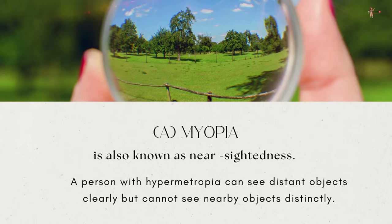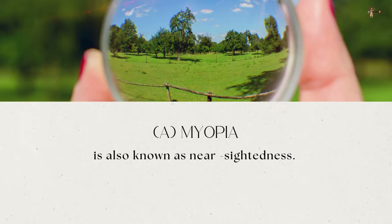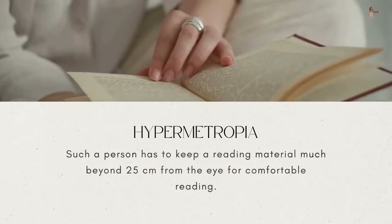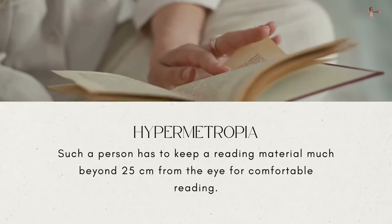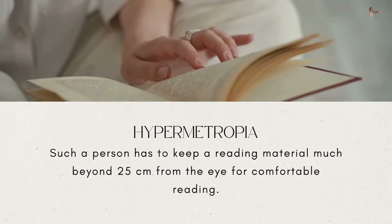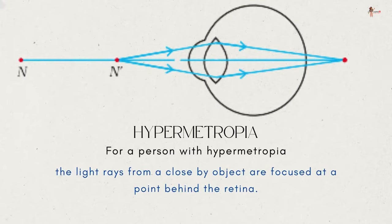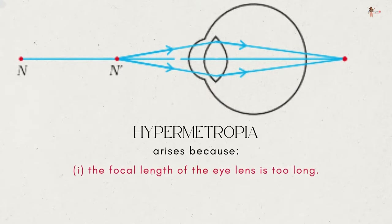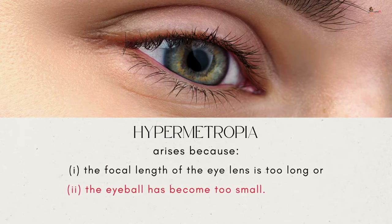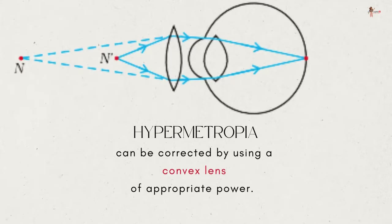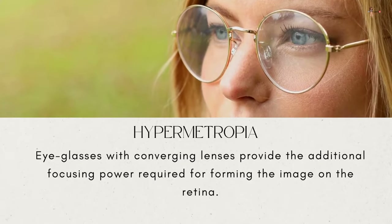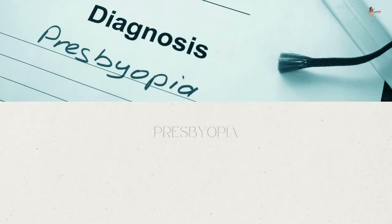Hypermetropia, also known as farsightedness: a person with hypermetropia can see distant objects clearly but cannot see nearby objects distinctly. The near point for such a person is farther away than the normal 25 cm, so they must keep reading material much beyond 25 cm from the eye. This occurs because light rays from a close object are focused at a point behind the retina. The defect arises because the focal length of the eye lens is too long or the eyeball has become too small. It is corrected by using a convex lens of appropriate power.